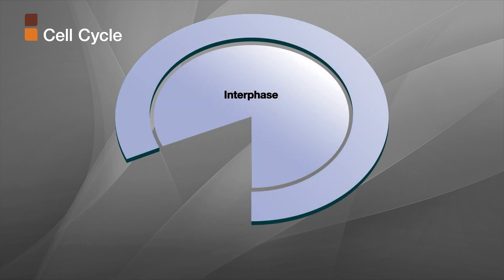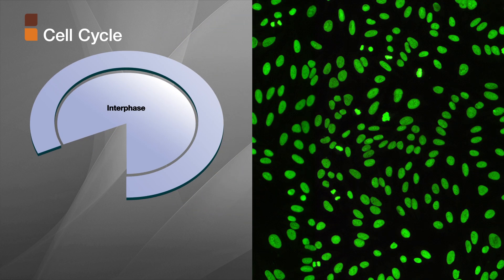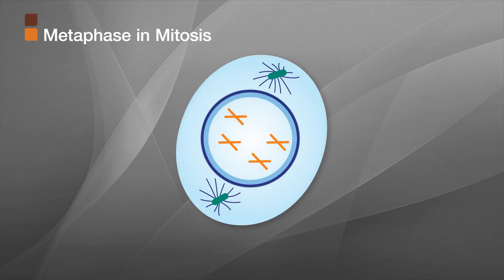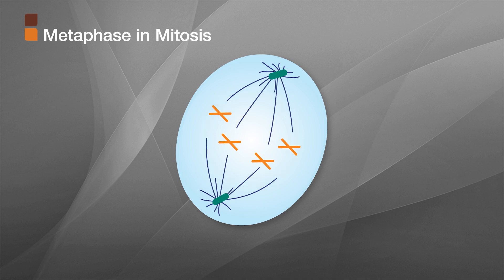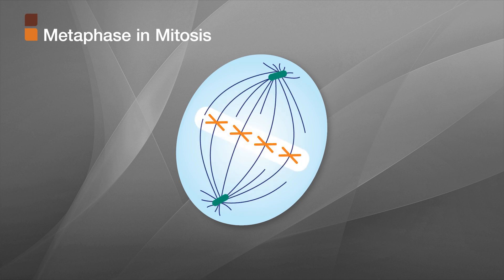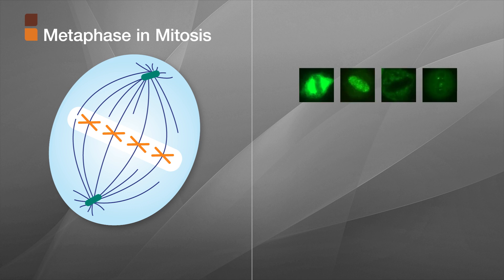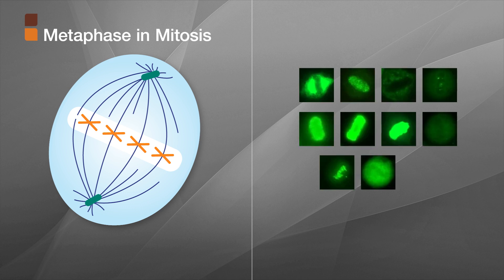Interphase is often called the resting phase — it's the time between cell birth and when the cell divides again. Most of the cells that you see on the slide are interphase cells, and most autoantibodies are directed against cells in interphase. Metaphase is the part of mitosis where the chromatin is highly condensed and aligned in the center of the cell. Cells at metaphase are ideal for dividing cell pattern identification because they have a distinctive appearance that is easy to recognize.